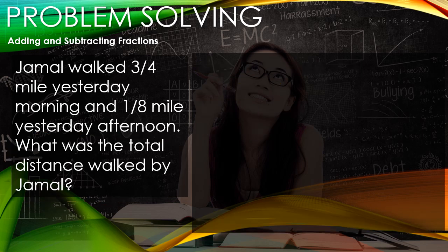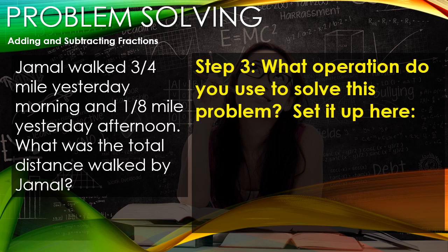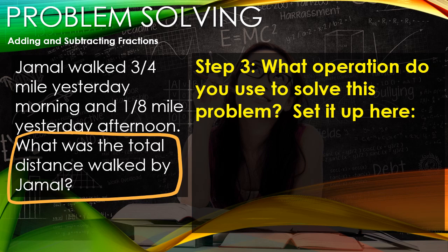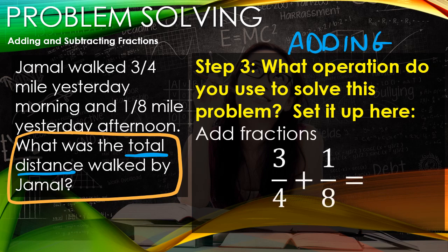In step number three, we have to figure out what operation are we using. We can look at the question again. The question was what's the total distance? So total distance means we are adding, friends. We're gonna be adding these two fractions together. So we're gonna set that up in this box in step number three. We're gonna set it up as 3/4 plus 1/8. You can see we haven't solved anything yet, but we're just setting ourselves up to be very successful in solving this problem.